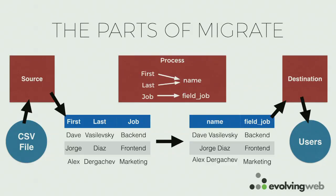When you're doing migrations, this is just one migration, but you'll often have many — maybe one for each content type, one for users, and then a few for taxonomy terms. On a complete example, you might have five or six different kinds of migrations that you're running.